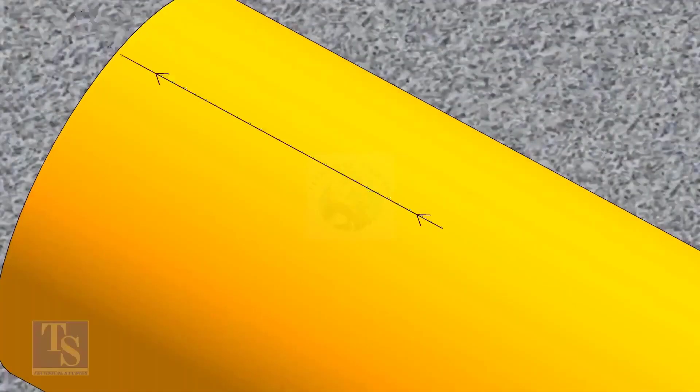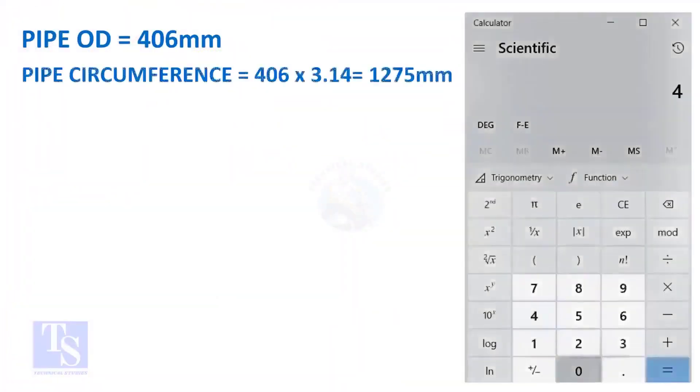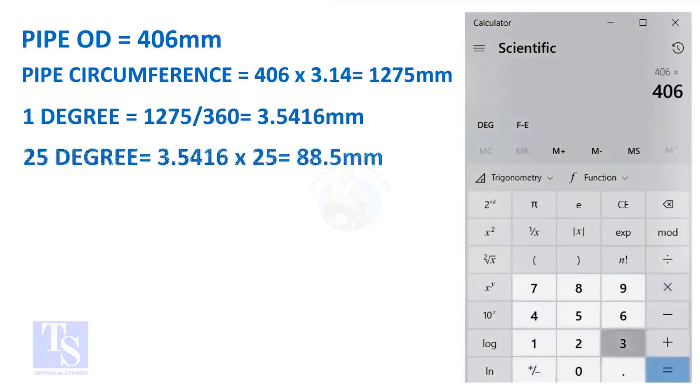Let us calculate the circumferential distance or arc length for 25 degrees. Multiply the OD by 3.14. You will get the circumference of the pipe. Divide the circumference by 360, you will get the arc length of 1 degree. And finally, multiply the 1 degree arc length by 25. Now you have the arc length of 25 degrees. You can apply this formula to get the arc length of any degree.